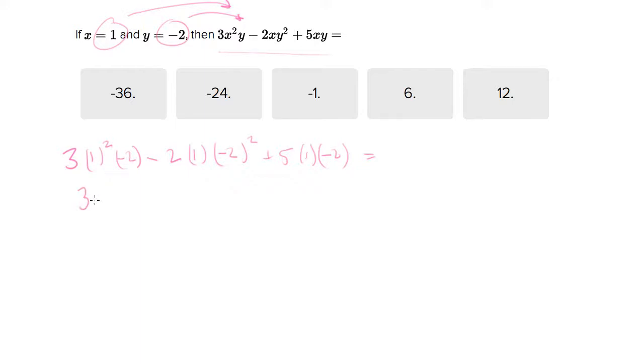So this becomes 3 times negative 2 minus, see negative 2 squared is 4, 4 times 2 is 8, this is negative 8.